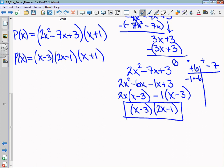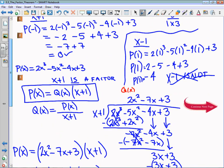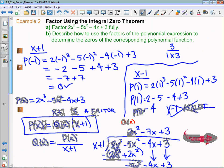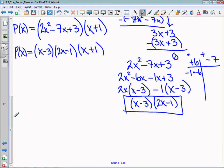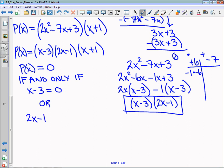The point of this, and it answers Part B which says describe how to use the factors of the polynomial to determine the zeros of the polynomial function. I'd like to say that P(x) equals 0 if and only if x - 3 equals 0, or 2x - 1 equals 0, or x + 1 equals 0.